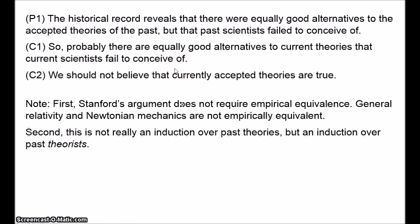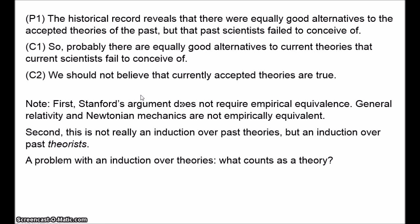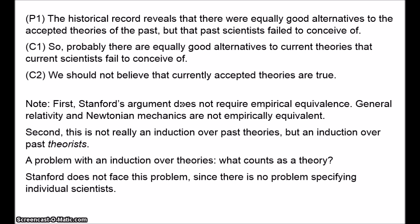Second, notice that this isn't strictly speaking an induction over past theories — it's an induction over past theorists, past scientists. One problem with trying to perform an induction over past theories is that it's very difficult to specify the inductive base, because what counts as a theory? Different scientists hold different versions, and theories change over time. Is modern Darwinism the same theory as 19th century Darwinism with significant changes, or are they different theories that include similar core claims? Obviously, there's no problem at all with specifying individual scientists, so Stanford's induction is arguably on slightly more secure footing.